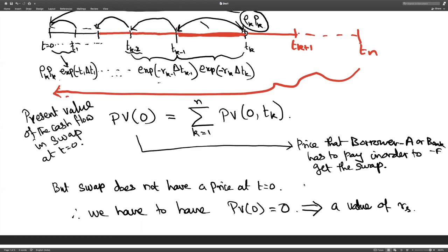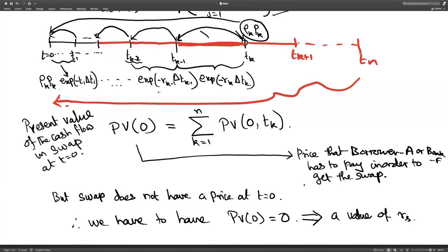The Rk values are already fixed by bank V, who is not part of the swap. Therefore we cannot tweak the Rk values, and similarly the notional principal is also not a part of the swap. The only parameter we can adjust is Rs. We adjust Rs to make PV equal to 0, and that fixes the value of Rs — which is what is called the swap rate. Let us now see how to solve this equation to get Rs.